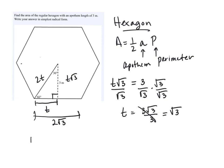So our area then is 1/2, the apothem, 3 times the perimeter. And the perimeter, one side is 2√3. So six of those, six 2√3's would be 12√3.